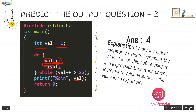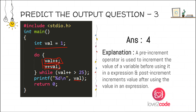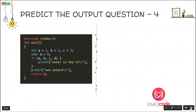The explanation: a pre-increment operator increments the value of a variable before using it in an expression, while post-increment increments the value after using it in the expression. For example, if val is 1, it will be used as 1 in the expression and then become 2 after execution.